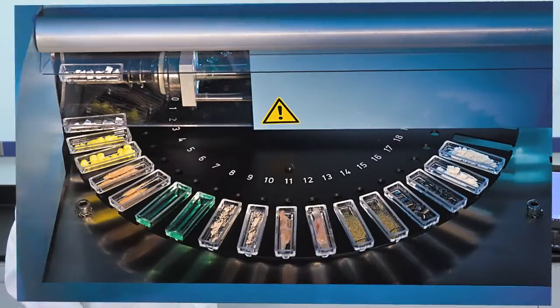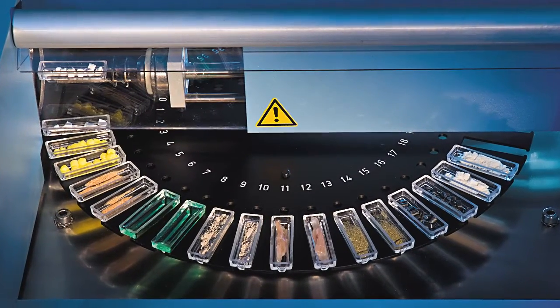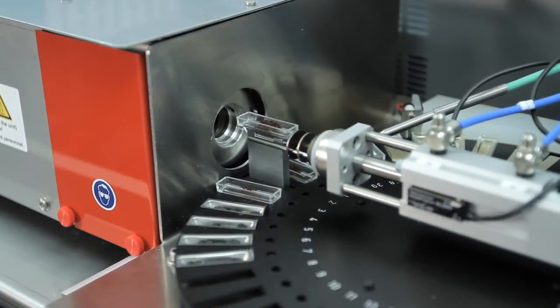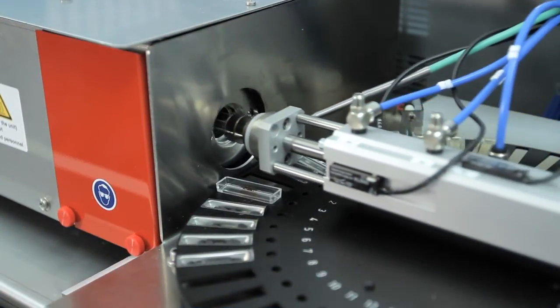Simply load a solid or liquid into the sample boat and place the boat onto the auto sampler. A pneumatic arm will pick up the sample and inject it into a furnace for drying and decomposition.